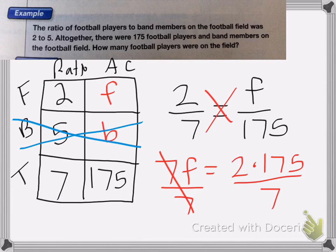So we can actually cancel out the 7 and the 175. 7 becomes a 1 and the 175 becomes 25. If you didn't know that, you can always just divide the numbers. So we're left with 2 times 25. So that is equal to 50. So with that knowledge, I know that 50 of the people on the field are football players.